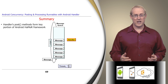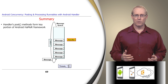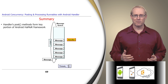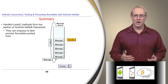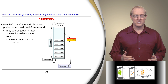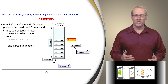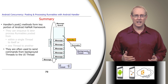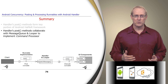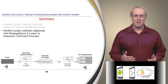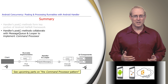In summary, the post methods in the handler class form a key portion of the Android Hammer framework. In particular, they provide the means to enqueue and later process runnables posted from within a single thread to itself, or posted from one thread to another. They're often used to send runnable commands from one or more background threads to the user interface thread. The collaboration between handler's post methods and the message queue and looper classes implements the command processor pattern, as described in upcoming videos.